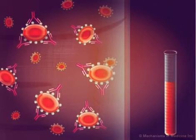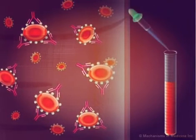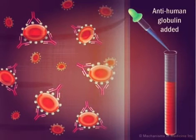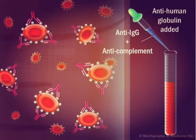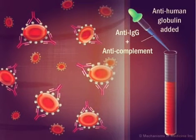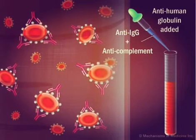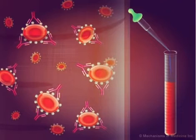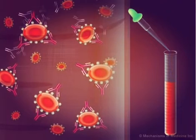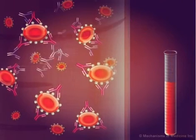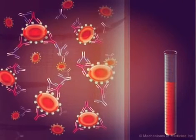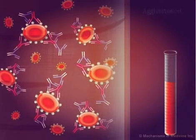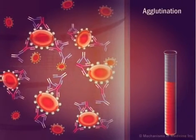These red blood cells are incubated with anti-human globulin containing both anti-IgG and anti-complement. The anti-human globulin binds to the patient's antibody, coating the red blood cells, resulting in agglutination.